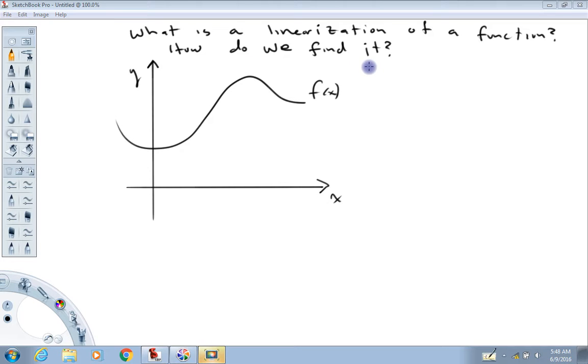And two, how do we find it? So what we're looking at here, imagine some arbitrary function here. If I pick a point here anywhere on this curve, doesn't matter where...